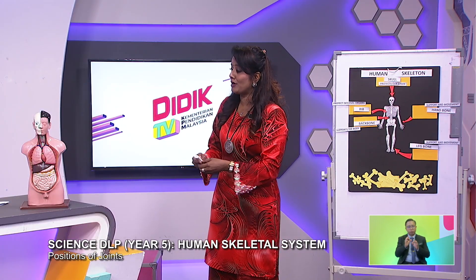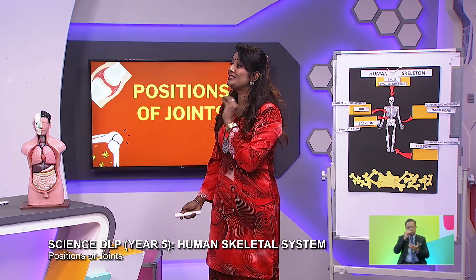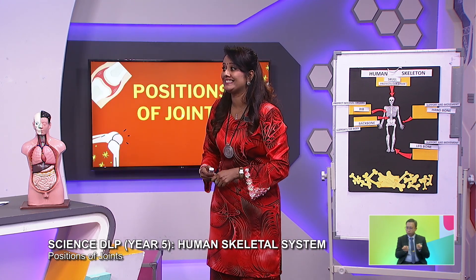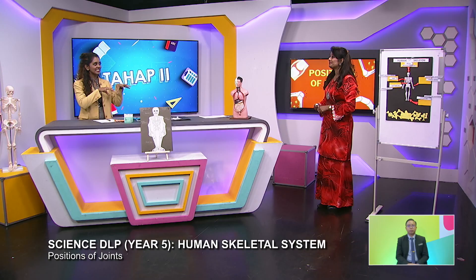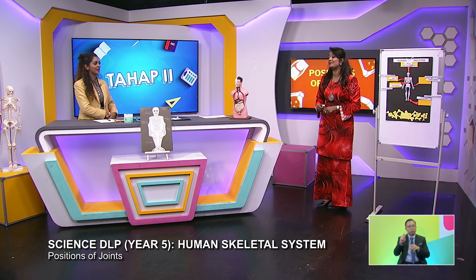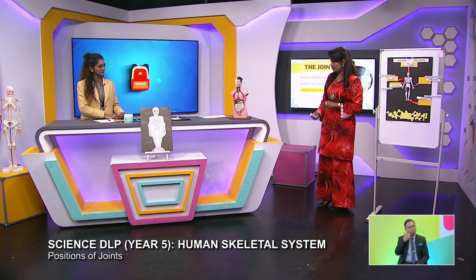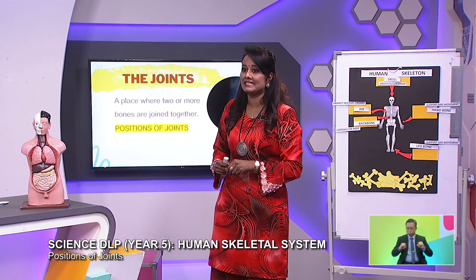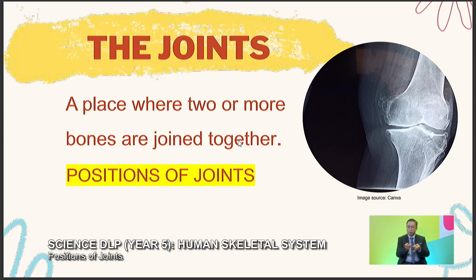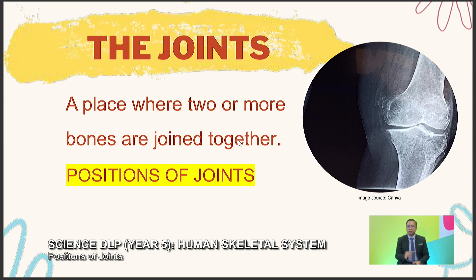For today, after this, we are going to learn about positions of joints — in between the bones. The joint is a place where two or more bones are joined together. For example, you can see next to us there's a skeleton — you can see two bones joined together. These are the meaning of joints.